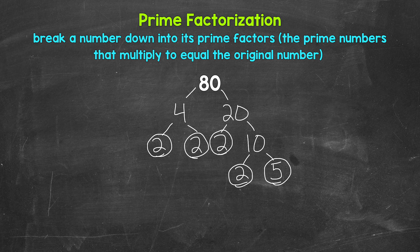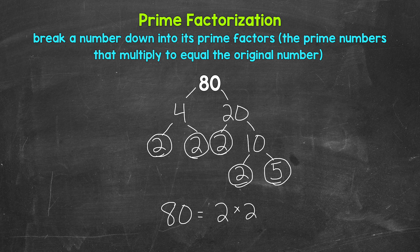And that's the prime factorization of 80 — we don't have anything else that we can break down any further. We have all prime numbers. So we can write this out as 80 equals, and then we write our prime factors in order from least to greatest, multiplying them. We start with 2, and we have four 2s: 2 times 2 times 2 times 2, and then times 5.